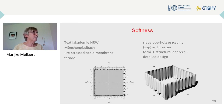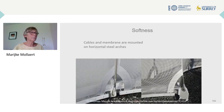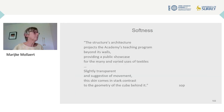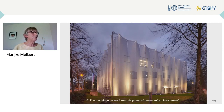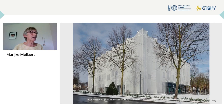The next aspect is softness. The building of the Textile Academie in Munchengladbach has a pre-stressed cable membrane facade. Cables and membrane are mounted on horizontal steel arches. The structure's architecture projects the Academie's teaching program beyond its walls, providing a public showcase for the many and varied uses of textiles. It's slightly transparent and suggestive of movement. This skin comes in stark contrast to the geometry of the cube behind. The lighting in the evening creates a fairy tale look, and in wintertime the facade is like a white veil.